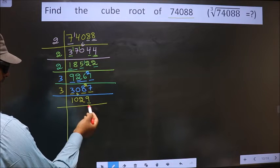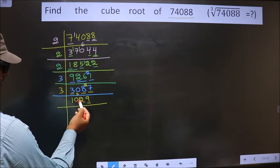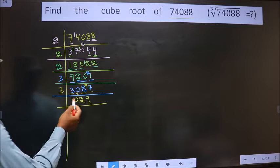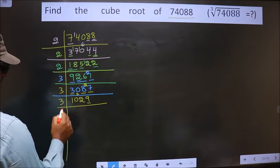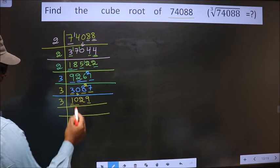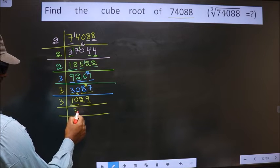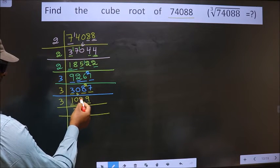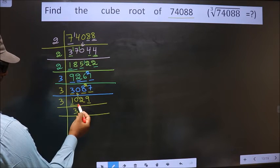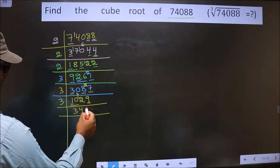The last digit is 9, so not divisible by 2. Adding the digits: 1+0+2+9=12. 12 is divisible by 3, so this number is also divisible by 3. We take 3 here. The first number is 1; since 1 is smaller than 3, we take two digits making it 10. Closest to 10 in the 3-times table is 3×3=9. 10 minus 9 is 1, carried forward making it 12. 3×4=12. Next number is 9; 3×3=9.